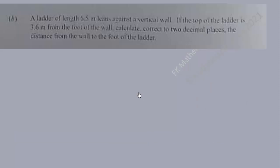Now let's look at part B. A ladder of length 6.5 meters leans against a vertical wall. If the top of the ladder is 3.6 meters from the foot of the wall, calculate correct to two decimal places the distance from the wall to the foot of the ladder. So this is how we can illustrate it. This is the ladder and it is 6.5 meters.